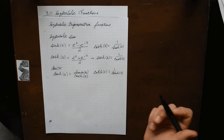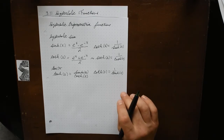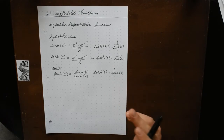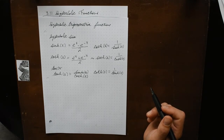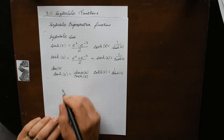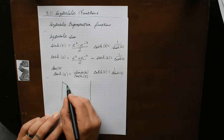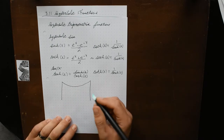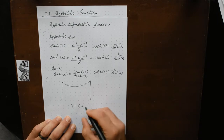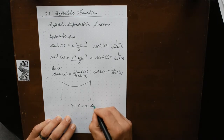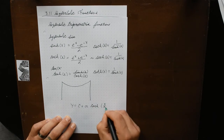Applications of the hyperbolic functions occur whenever an entity such as light, velocity, electricity, or radioactivity is gradually absorbed or extinguished. The most famous application is that the shape of a telephone wire or an electric wire between two poles is modeled by the function y equals some constant plus a times cosh(x divided by a).